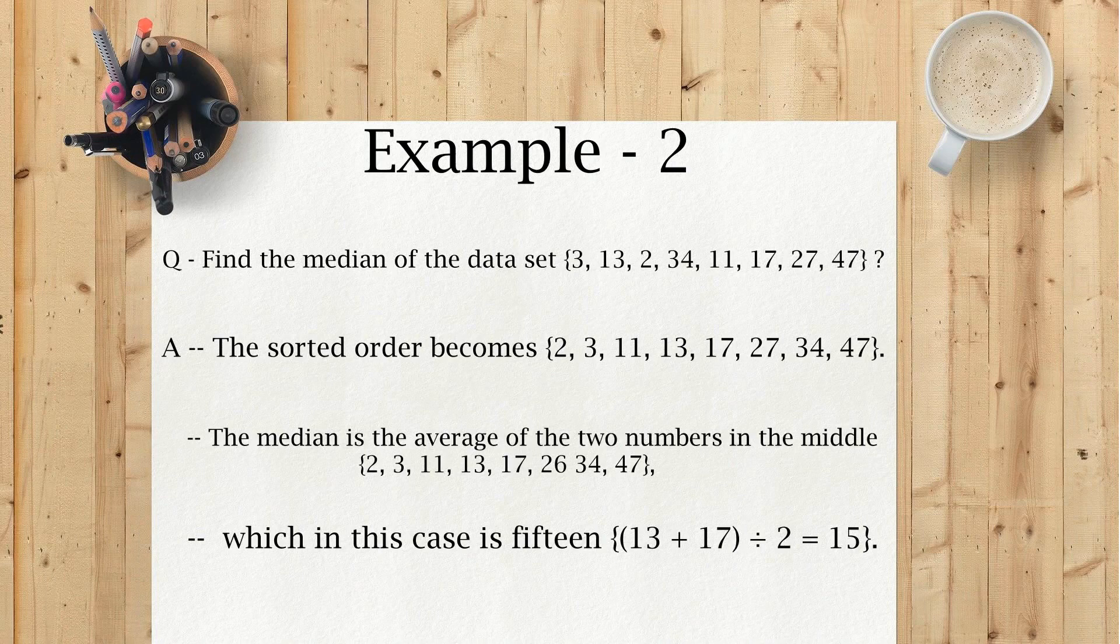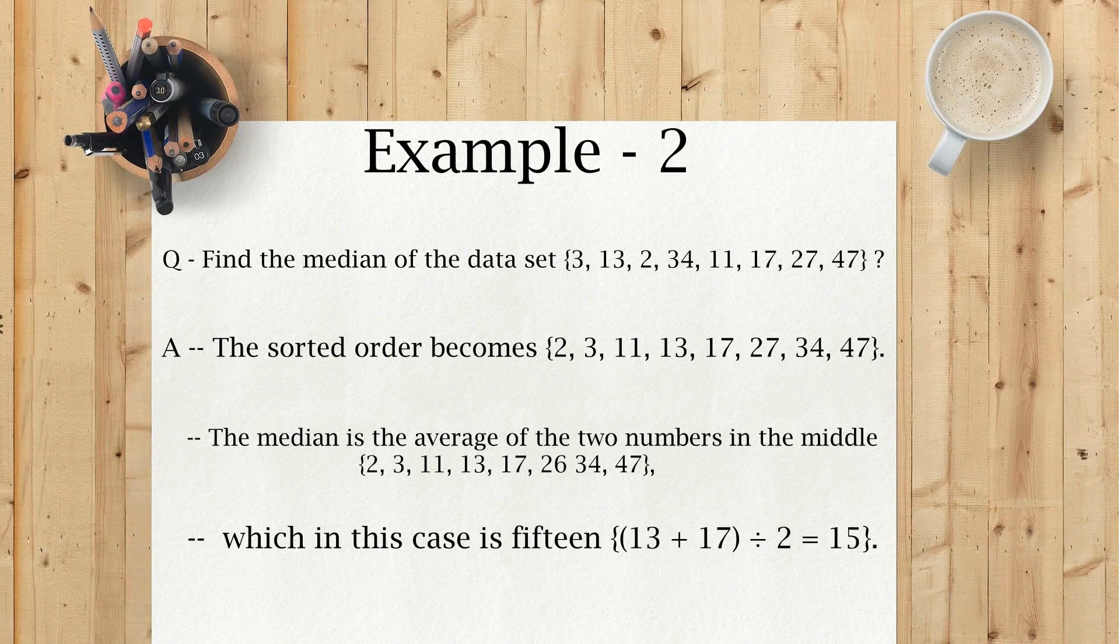The median is the average of the two numbers in the middle: 2, 3, 11, 13, 17, 26, 34, 47. Which in this case is 15. 13 plus 17, divided by 2, is equal to 15.